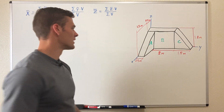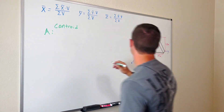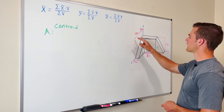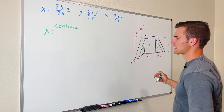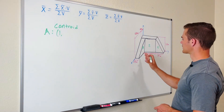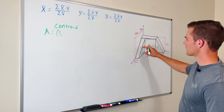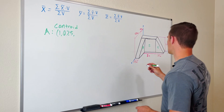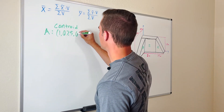Starting out with A: its centroid in the x direction is one third along the base. The base is 1.5 meters long, so one third of 1.5 is 0.5, but you also add the thickness of B, so its x coordinate is 1 meter from the origin. In the y direction, since it's symmetrical, it's just in the middle — so the centroid coordinate in y is 0.25. In the z direction it's once again one third along the height; it's 1.8 meters tall, so one third of 1.8 is 0.6.